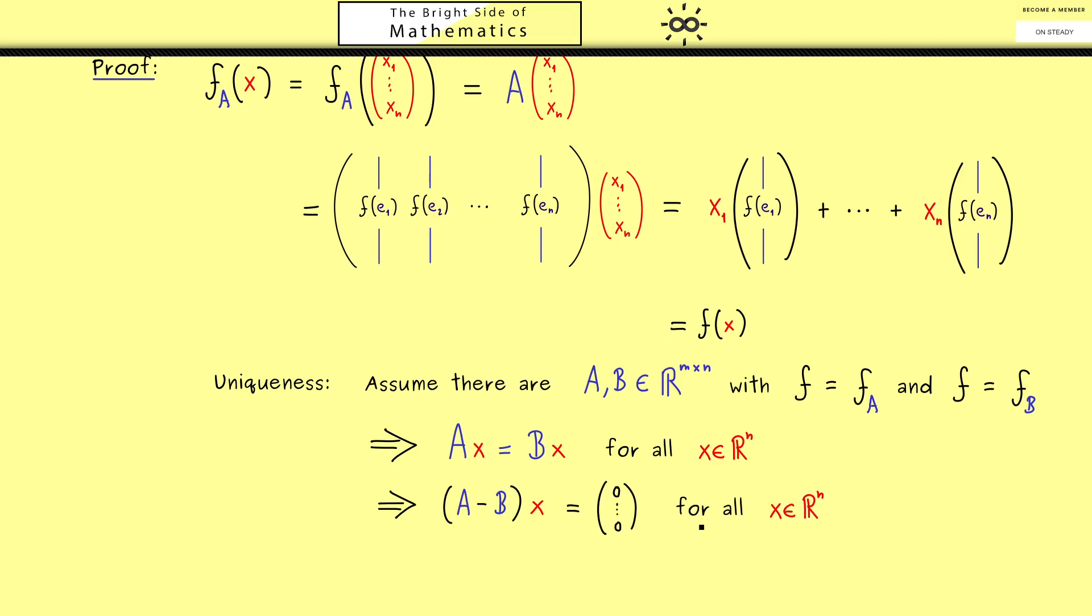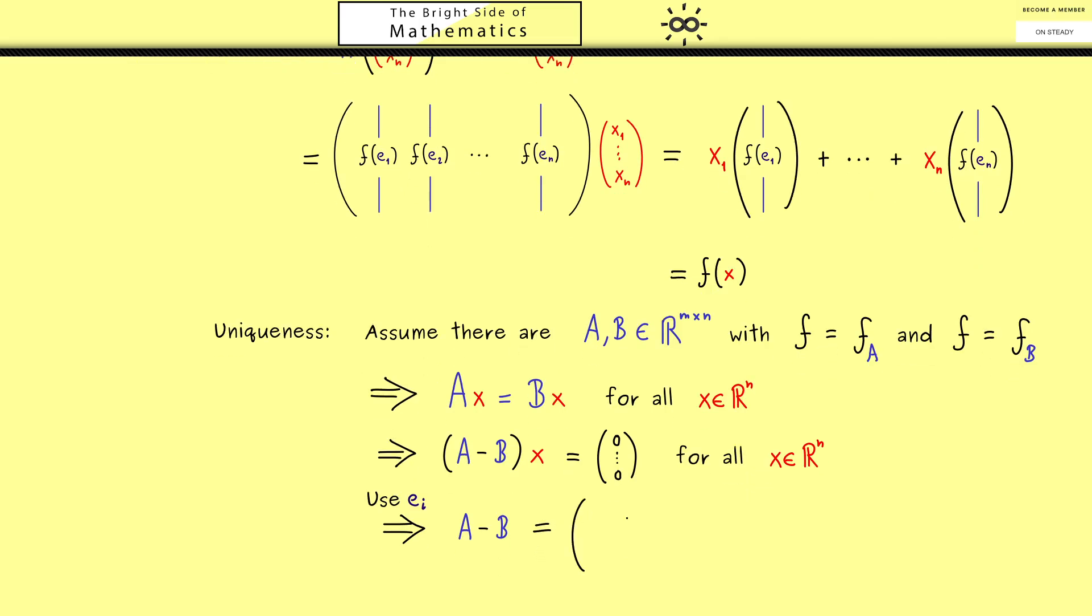And the important fact here is that this still holds for all possible vectors x in R^n. In particular we can choose the canonical unit vectors. For example here if we use e_i for x, this equation here tells us that the i-th column of this matrix here is the zero vector. And now of course this argument works for all indices i. Hence all the columns of this matrix are zero. So in short A-B is the zero matrix. Which simply implies that A is equal to B. And there you see this shows us the uniqueness for the matrix representation of a linear map. Therefore the proof is indeed finished.